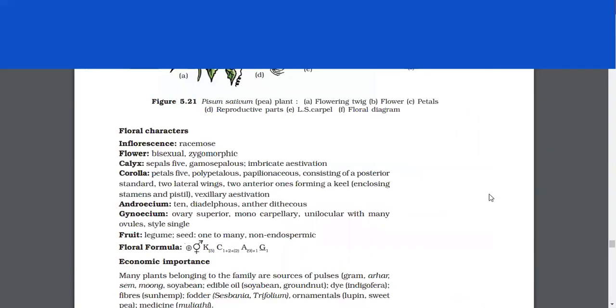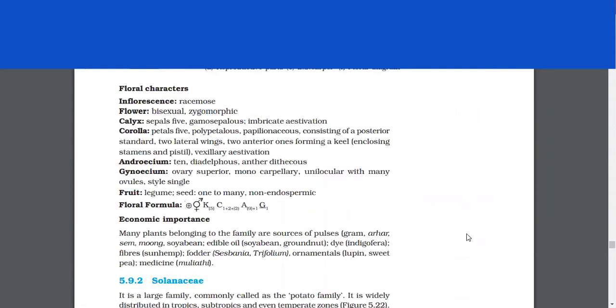Floral characters. Inflorescence, racemose, flower, bisexual, zygomorphic, calyx, sepals 5, gamosepalous, imbricate estivation, corolla. Petals 5, polypetalous, papilionaceous, consisting of a posterior standard, two lateral wings, two anterior ones forming a keel, vexillary estivation. Androecium 10, diadelphous, anther, dithecous. Gynoecium,